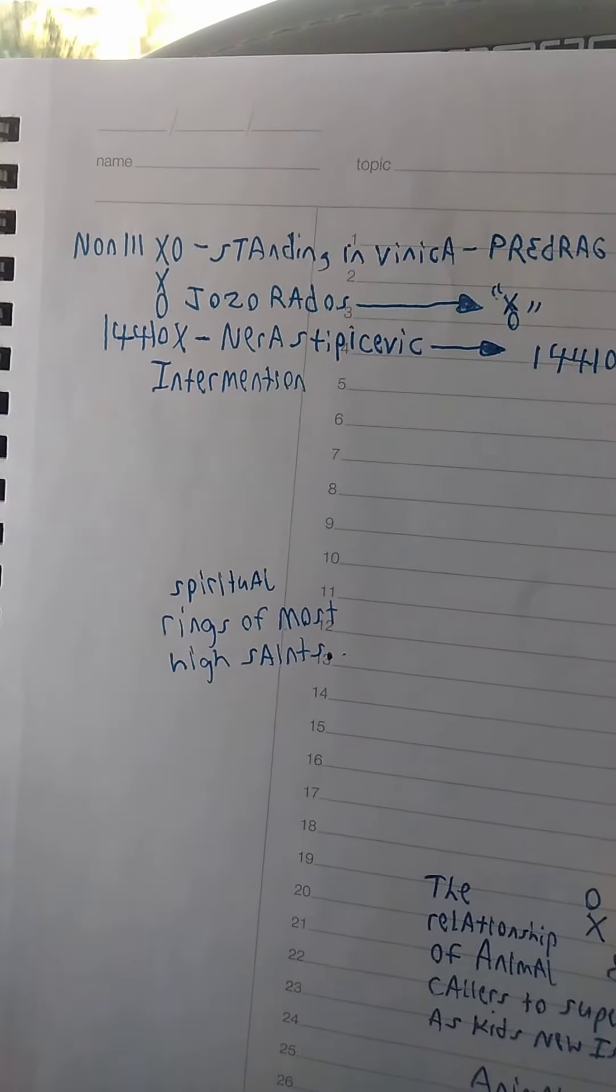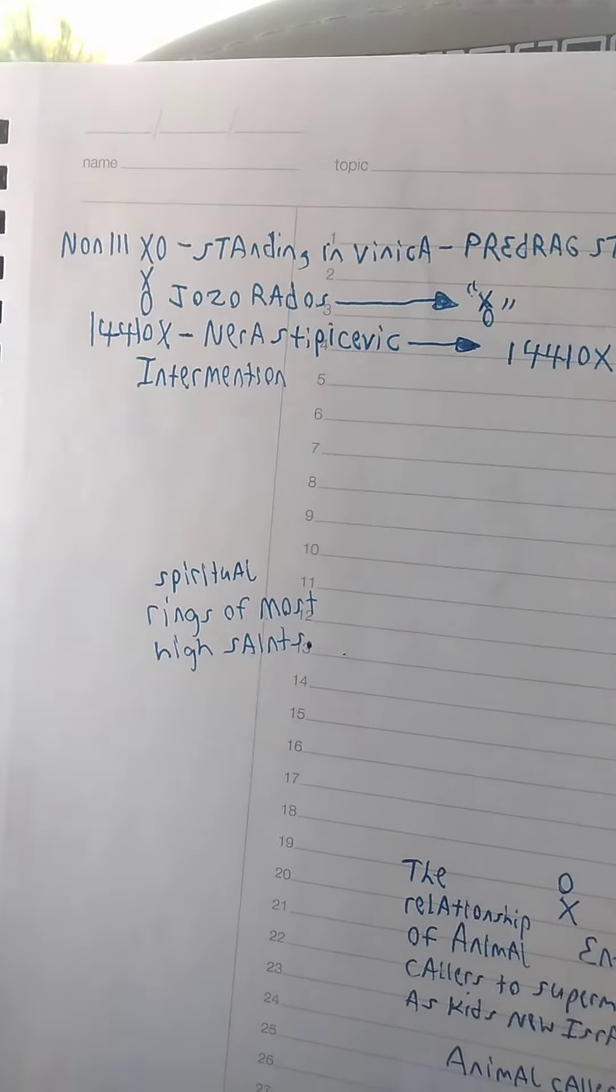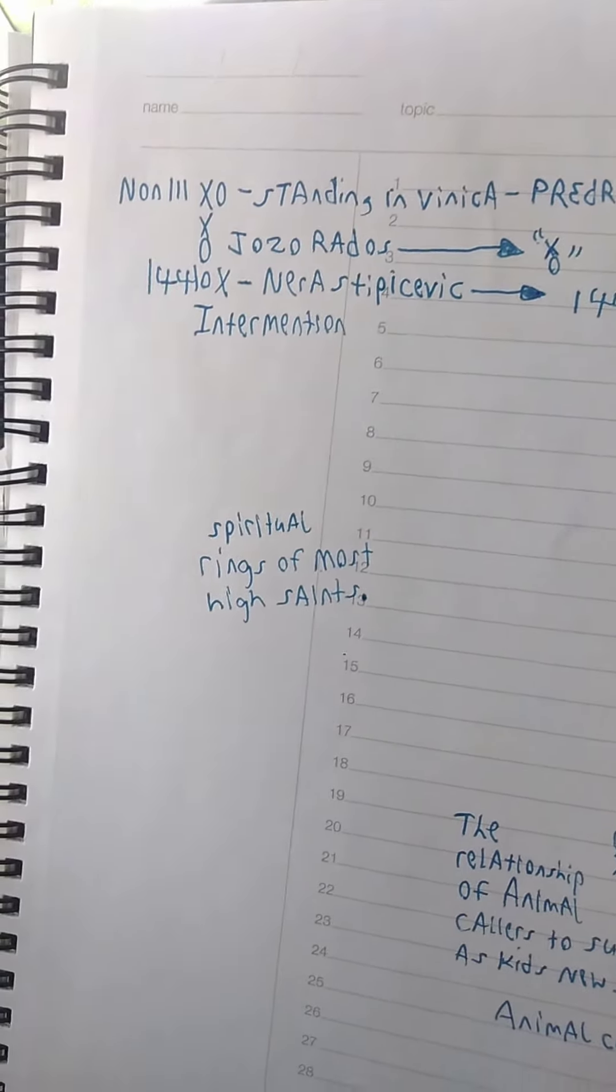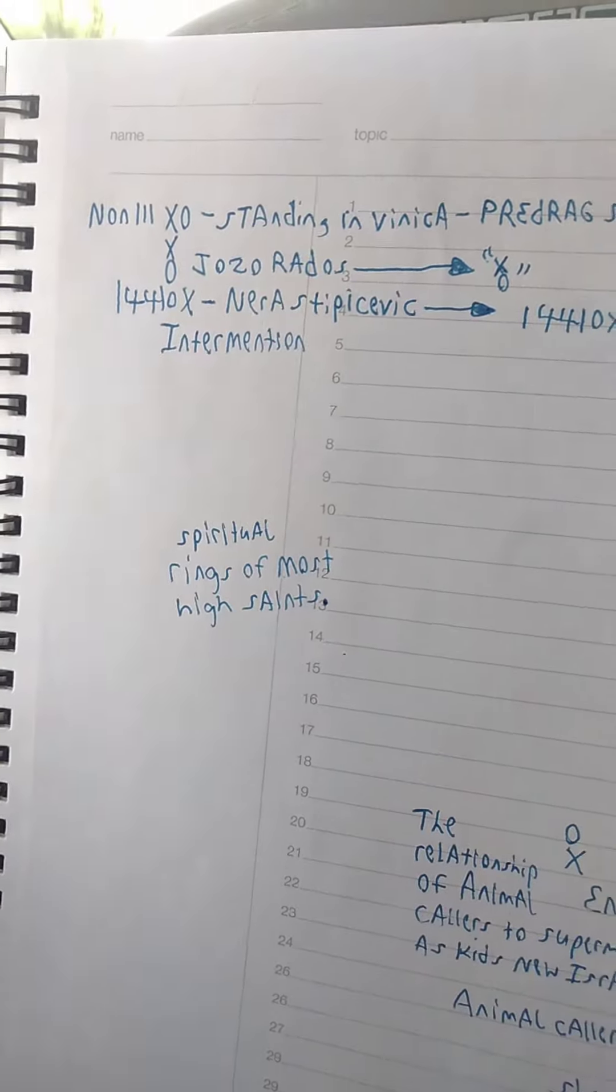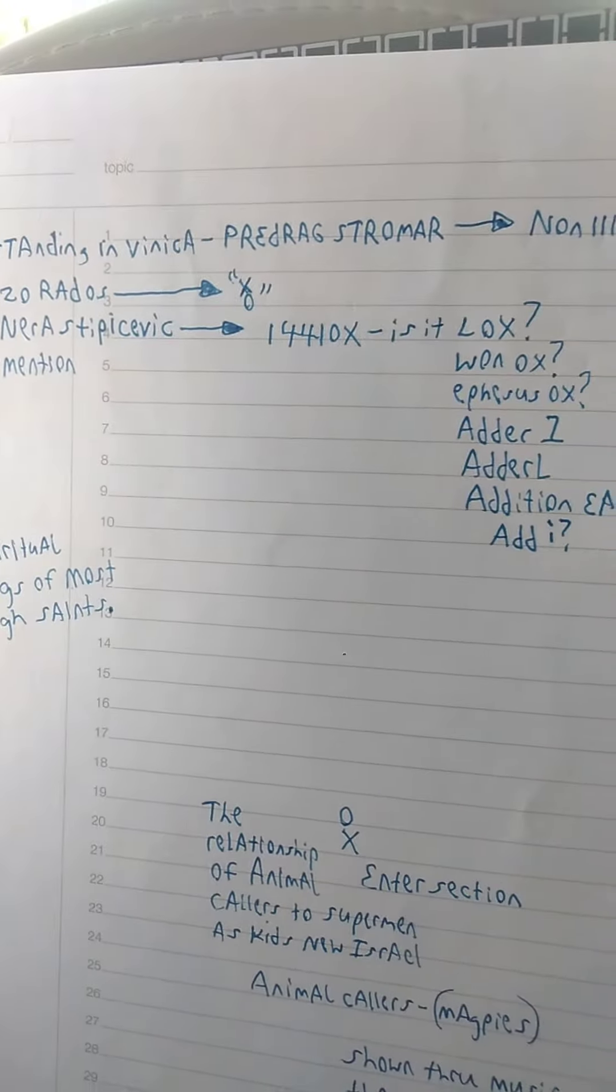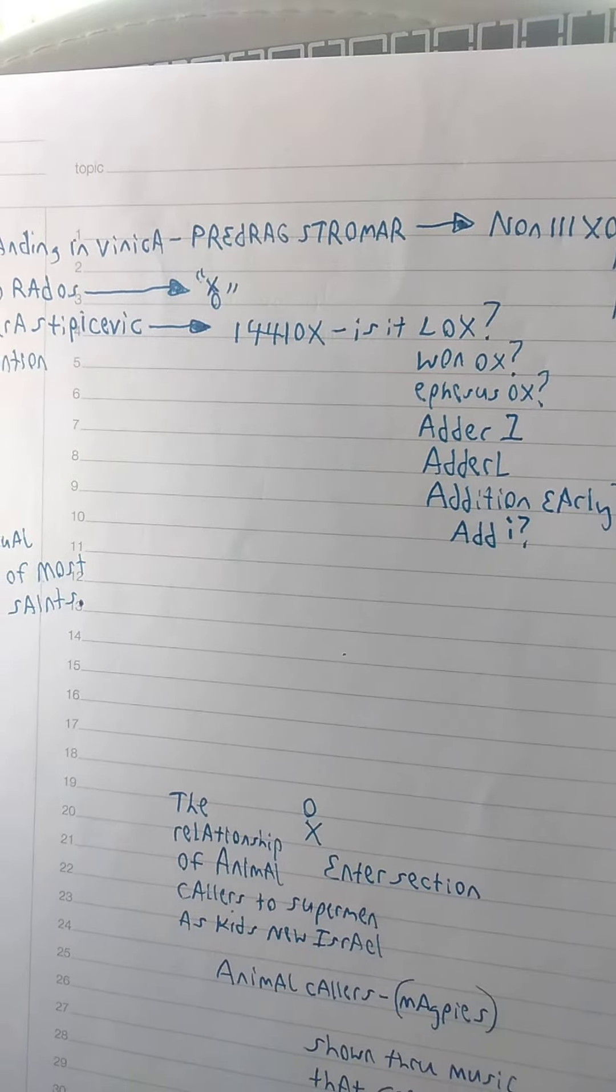Okay. XO, Jozo Rados. That's XO. 1-4-4-1-0-X. XO, Nira Stipekevic, 1-1, or 1-4-4-1-O-X.